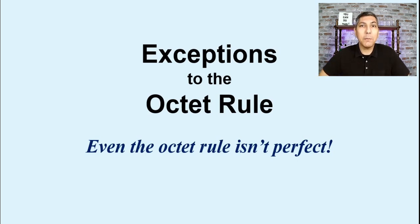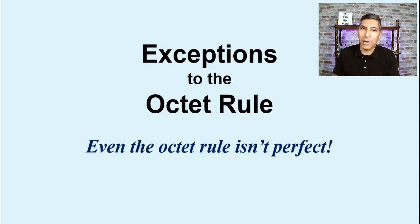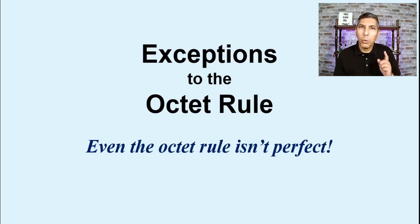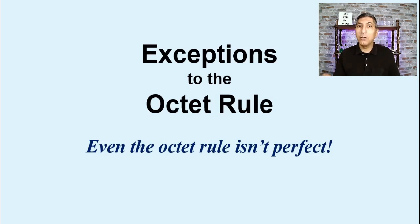Now in this video, we're talking about exceptions to the octet rule. In the last couple of videos, we've been learning about how to draw Lewis electron dot diagrams, and we noticed that in pretty much every molecule we drew, the atoms are trying to get eight valence electrons — that's called an octet. Hydrogen was one notable exception, being stable with two. Today we'll talk about some other notable exceptions and how to tell if a molecule will be an exception.